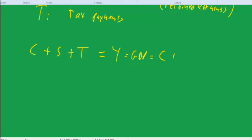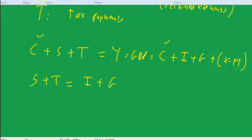Equals C plus I plus G plus X minus M. And if you like algebra, it's very tempting to get rid of the C's on both sides. And write this as S plus T is equal to I plus G plus X minus M.